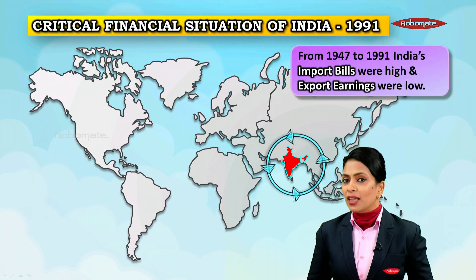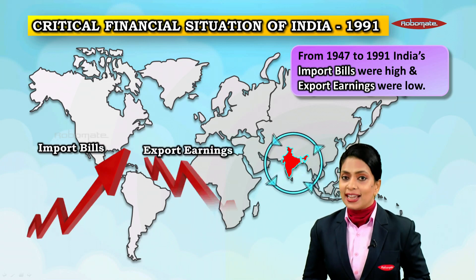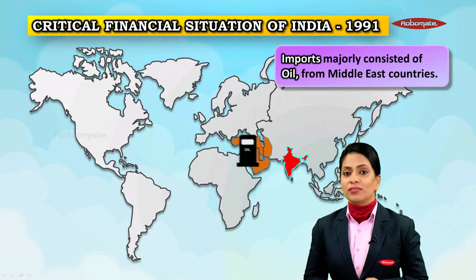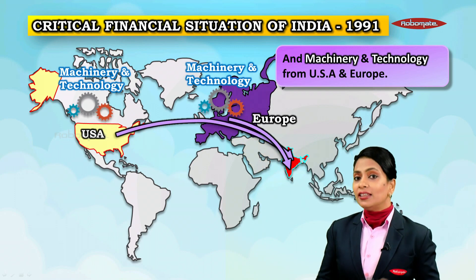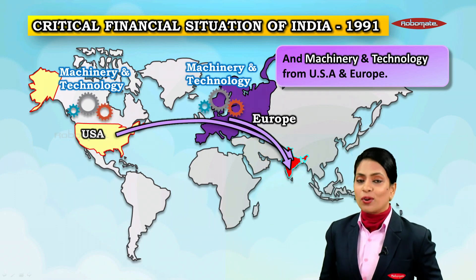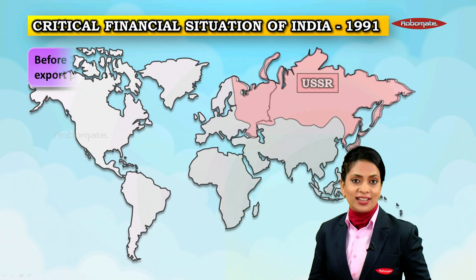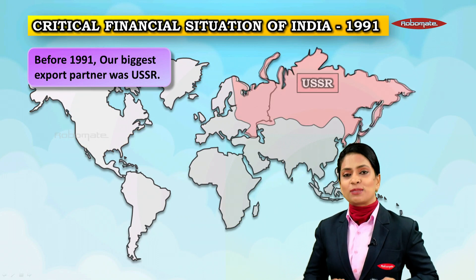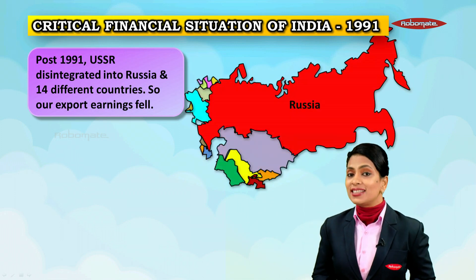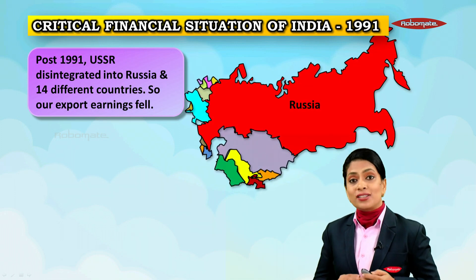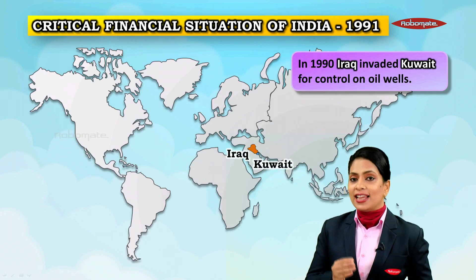Then in 1991 came the critical financial situation of India. From 1947 to 1991, India's import bills were very high and export earnings were very low. Our imports majorly consisted of oil from Middle East countries, and another big import was machinery and technology from USA and Europe. Our exports consisted of raw materials and food grains. Before 1991, our biggest export partner was the USSR.